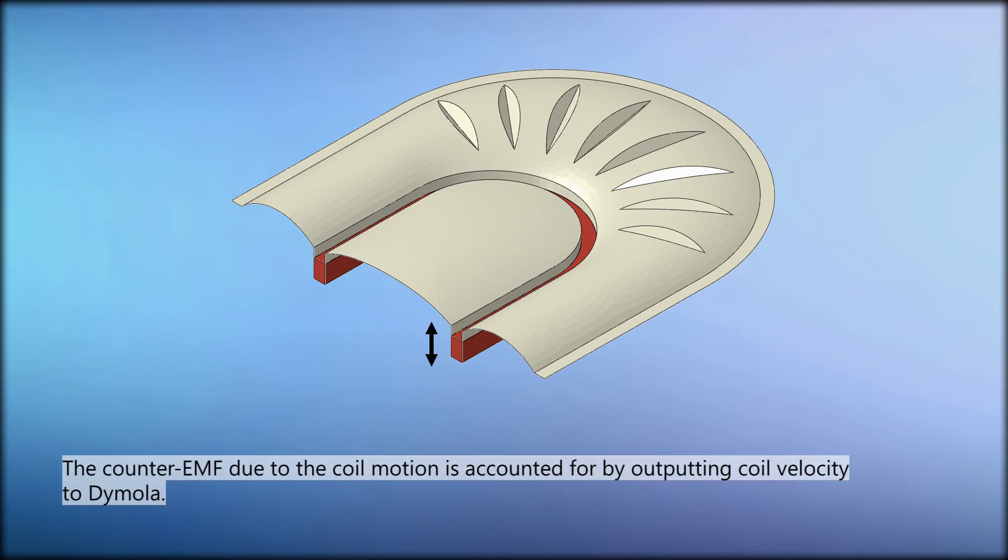The counter EMF due to the coil motion is accounted for by outputting coil velocity to Dymola.